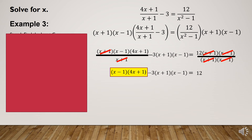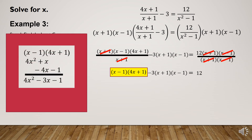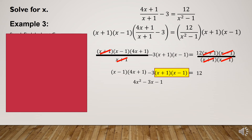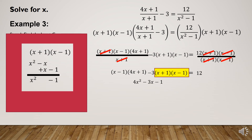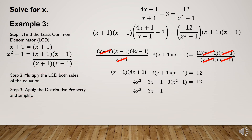Now multiply or simplify. Using the FOIL method, (x - 1)(4x + 1) = 4x² - 3x - 1. For the second term, (x + 1)(x - 1) = x² - 1, so we have -3(x² - 1) = 12.